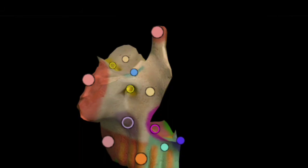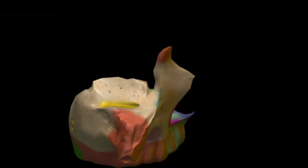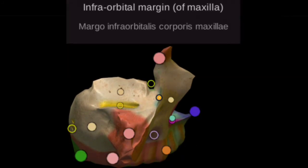Moving on to the orbital surface of the maxilla: it consists of the infraorbital margin, the infraorbital canal that ends as the infraorbital foramen, and the lacrimal notch, where the maxillary process articulates with the lacrimal bone.